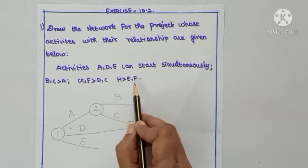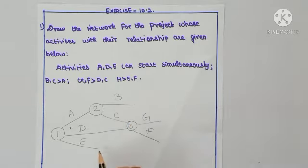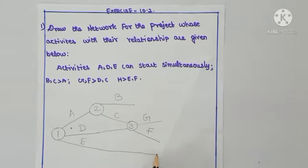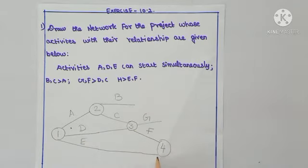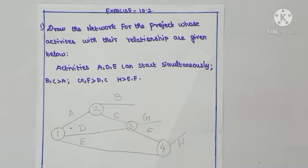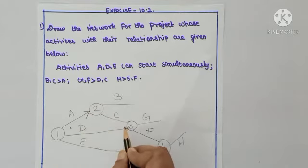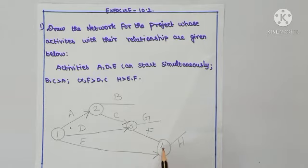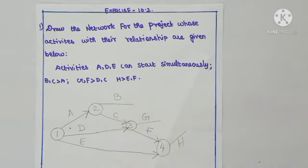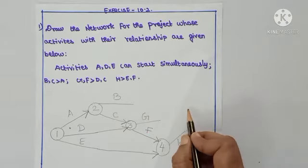After E and F, we have H. So we connect E and F to the next event, numbered 4, from which H is drawn. Now, B, G, and H cannot be left open, so we combine them to the endpoint, the final event.